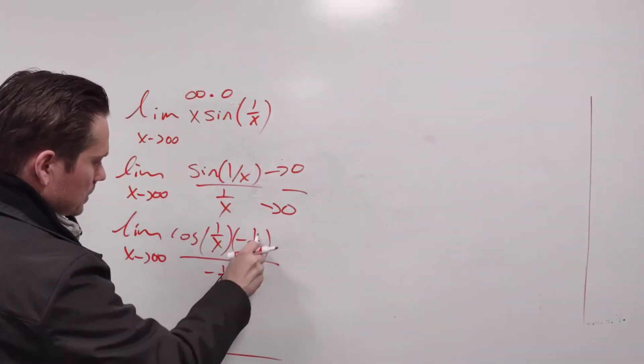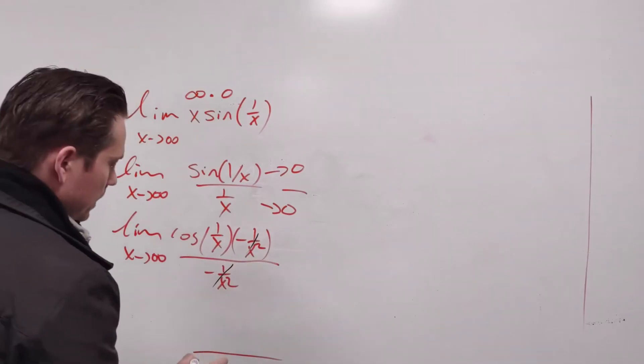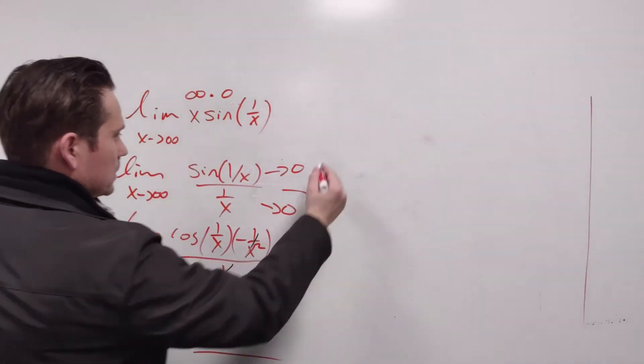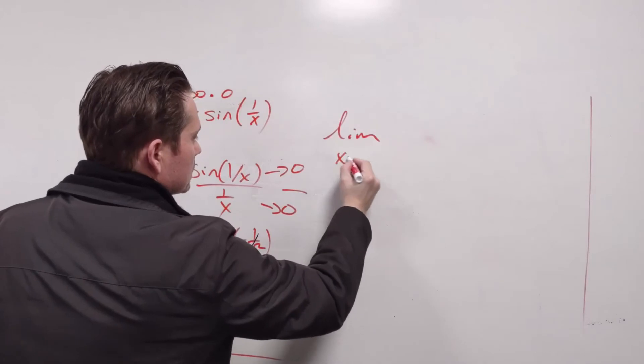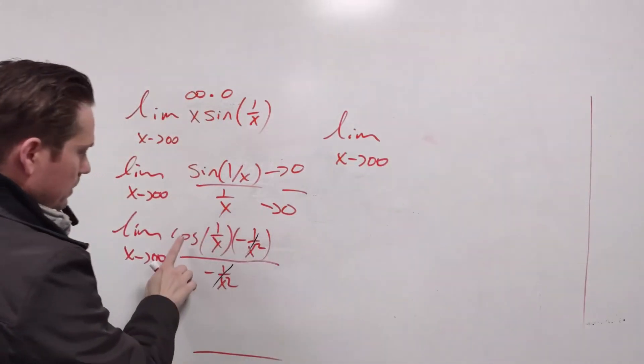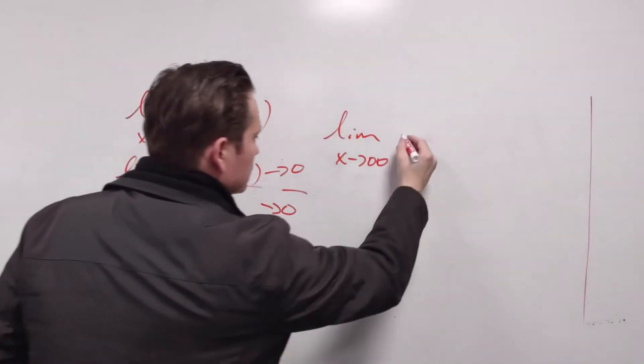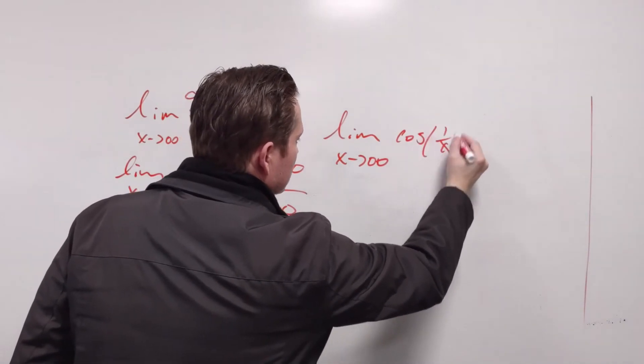Nice thing is now this cancels with this. And all that remains is the following: the limit as x approaches positive infinity of just cosine of 1 over x. So cosine of 1 over x this way.